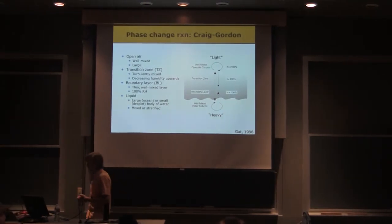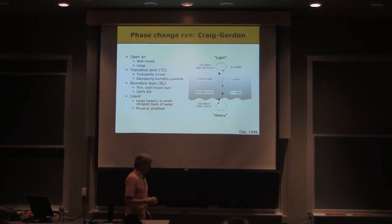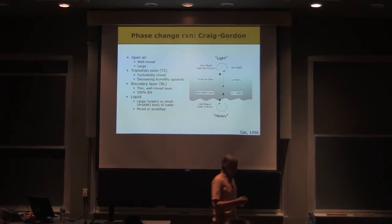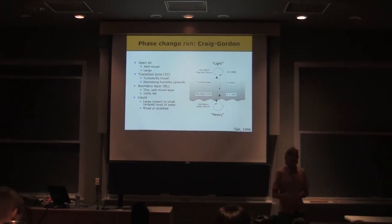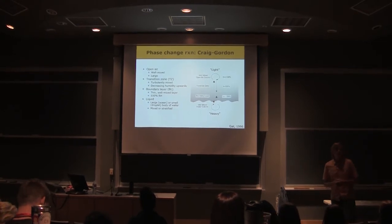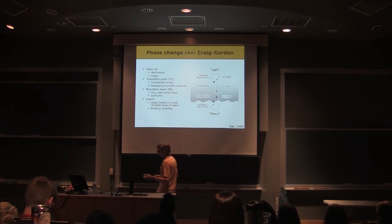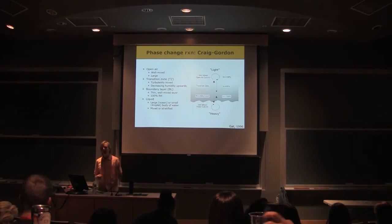This is a model that goes back to the 1960s. It was developed initially by researchers who were thinking about global water cycling and isotopes, and specifically thinking about the ocean. The ocean is the ultimate source of most of the water that ends up in the atmosphere. It gets cycled around, other things happen, but the ocean is where most of the evaporation is happening. If we want to understand the isotope composition of the atmosphere, or any other water that cycles through the atmosphere, we need to understand how isotopes are partitioned as water evaporates from the ocean.